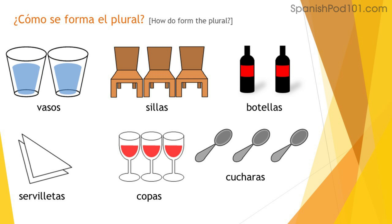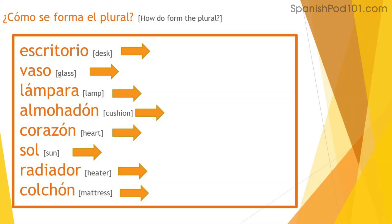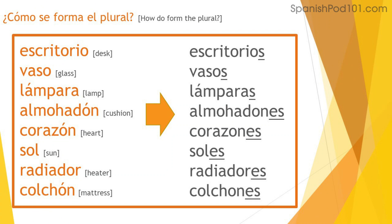Muy bien, muy buen trabajo. Good job. Now let's do this exercise — you have to transform these words into their plural form. Take a few minutes to think about the answer and when you're ready, continue the video. Respuesta: escritorio — escritorios, vaso — vasos, lámpara — lámparas, almohadón — almohadones, corazón — corazones, sol — soles, radiador — radiadores, colchón — colchones. Muy bien, muy buen trabajo.